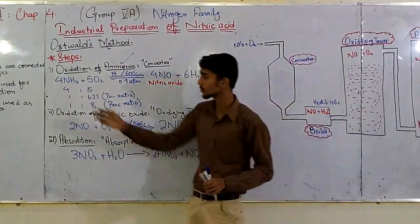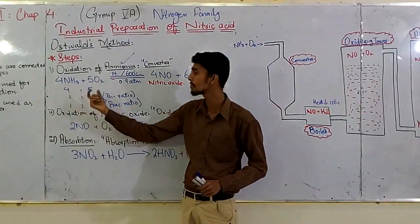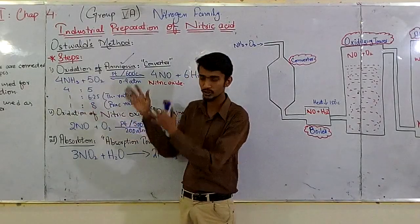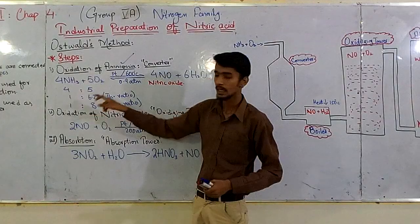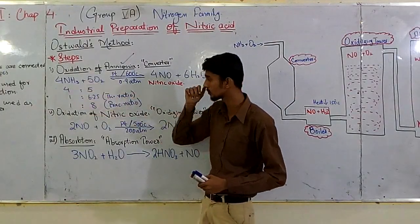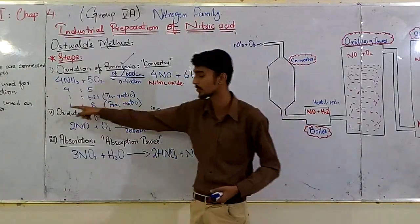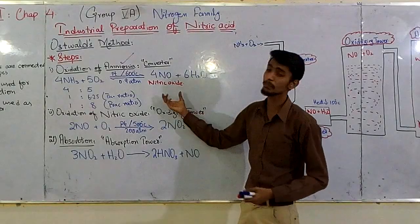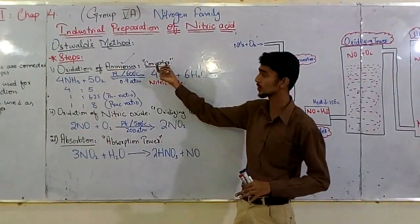We have different ratios. If we look at the ratios, the ammonia to oxygen ratio is 4:5. But if we consider the theoretical ratio, it is 1:6.25. The first step is oxidation of ammonia which is converted. We get nitric oxide.